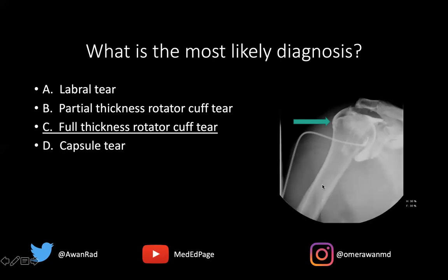A capsular injury would typically involve contrast going beyond the confines of the joint capsule adjacent to the joint — beyond the confines of the inferior glenohumeral ligament, perhaps right here. So the best answer here is a full thickness rotator cuff tear.